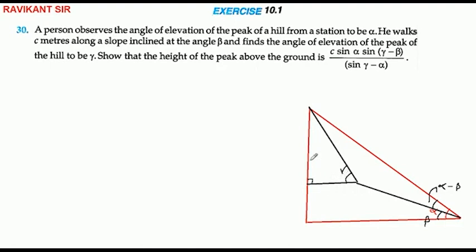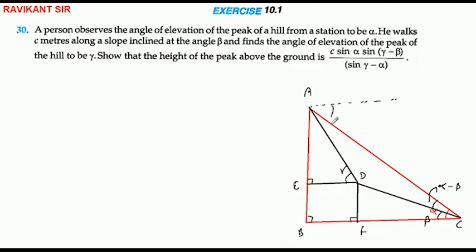यह gamma है, यह 90 होगा। इससे यहाँ पर perpendicular गिरा देते हैं। ज़्यादा कुछ नहीं लिखेंगे पिछले question के तरह। अब इसमें देखिए: A, B, C, D, E, F। यह 90-90 angles होने से यह आपका rectangle हो जाएगा। यहाँ से एक parallel लेते हैं तो alternate angle से यह भी वही हो जाएगा — alpha।